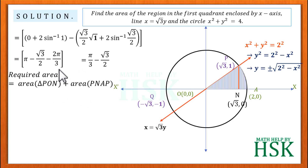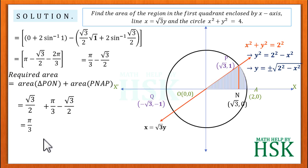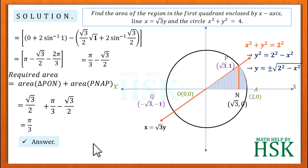The required total area equals the area of the triangular region plus the area of region PNAP: √3/2 + (π/3 - √3/2) = π/3 square units. This is the required answer.